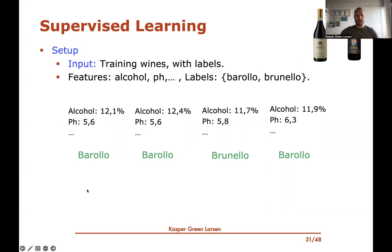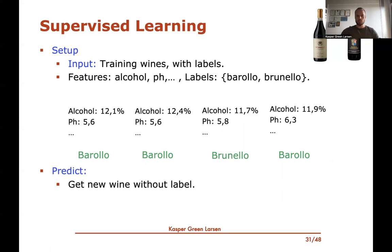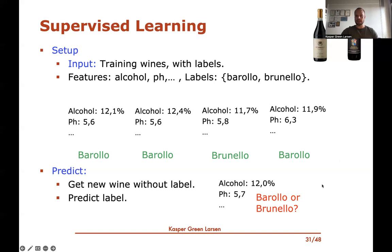You could also look at the wine example. We might have a bunch of different wine bottles we've already gathered, and we know for each whether it's Barolo or Brunello. We measured different properties of the wine: the alcohol percentage, the pH value, and so on. The features would be all the things that describe the wine, and the label would be Barolo or Brunello. Now if we get a new bottle of wine and we don't know whether it's Barolo or Brunello, but we know the properties — the features — we'd like to use this previously gathered data to predict whether it's Barolo or Brunello. That's the basic idea.